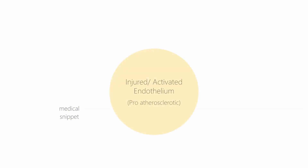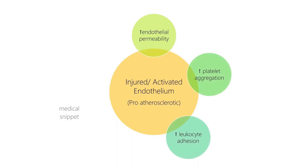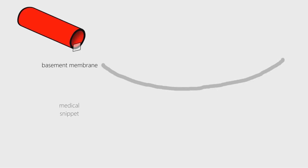Injury to the endothelium causes activation of the endothelial cells. The activated endothelium promotes the formation of atherosclerosis via various mechanisms. These include increased endothelial permeability, platelet aggregation, leukocyte adhesion, and generation of cytokines. Decreased production or activity of nitric oxide may be one of the earliest signs of atherosclerosis.